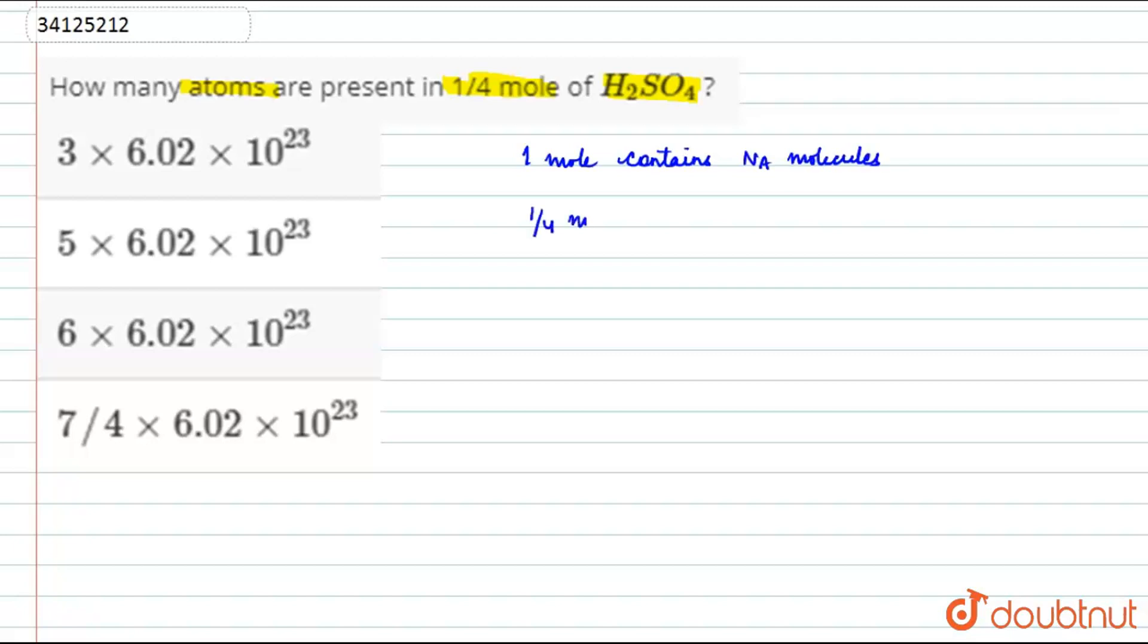So, 1/4 mole will contain 1/4 of N_A molecules. Alright, so here we go: 1/4 multiplied by 6.022 into 10 to the power 23.